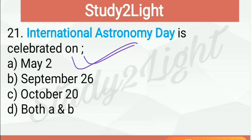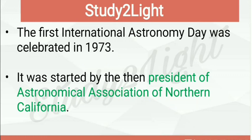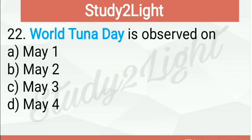Next question: International Astronomy Day is celebrated on — International Astronomy Day is celebrated on May 2nd as well as September 26th. It is celebrated twice a year, so both A and B are correct and option D is the right answer. The first International Astronomy Day was celebrated in 1973, started by the then President of the Astronomical Association of Northern California. The International Year of Astronomy was celebrated in 2009 to mark the 400th anniversary of Galileo's observations and Kepler's findings in the 17th century.